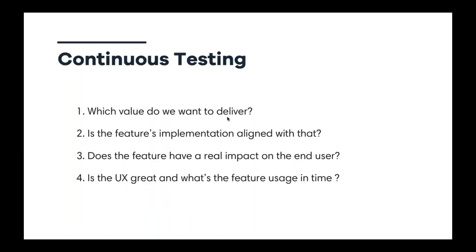When it comes to testing in such an environment, there are four questions we ask ourselves when working on a new feature. First: which value do we want to deliver? This discussion happens with all team members — product owners, testers, developers, marketing — before writing a single line of code. Everyone should be aligned on why we are building this feature.